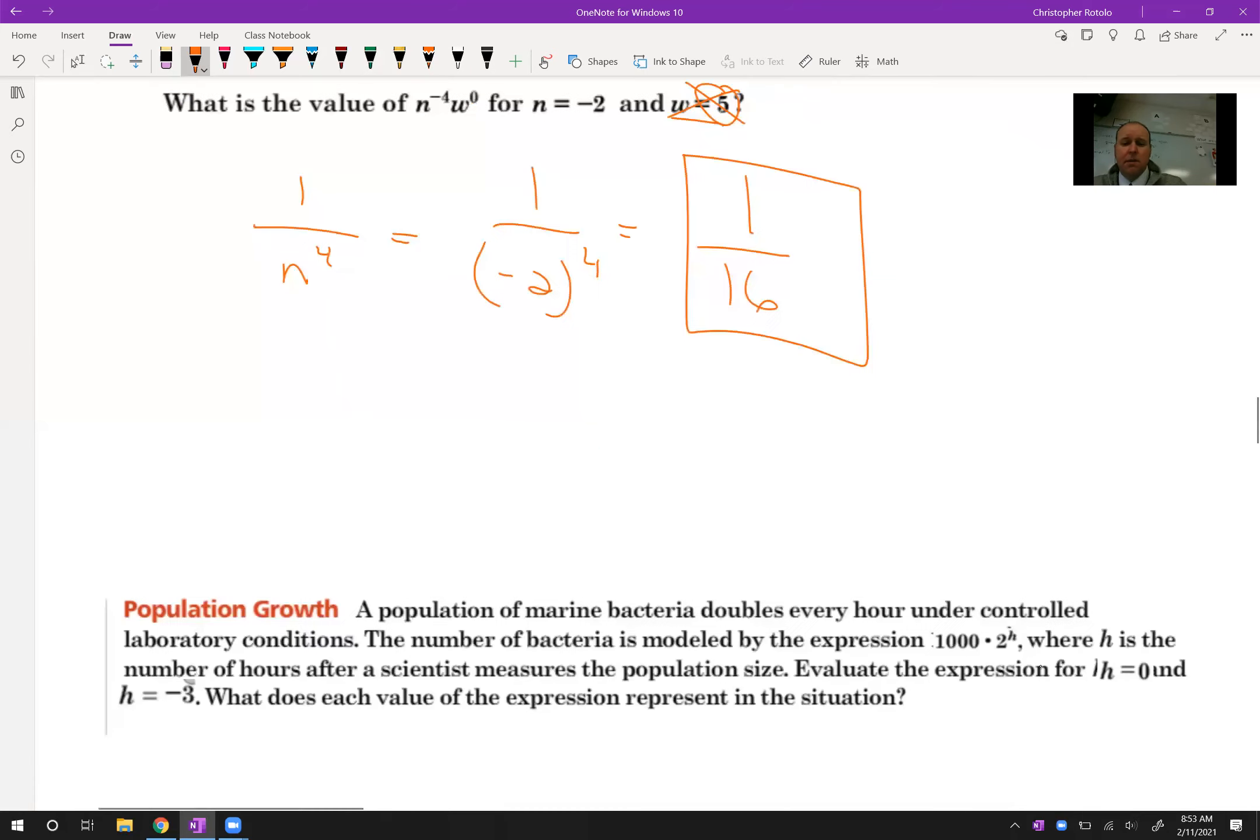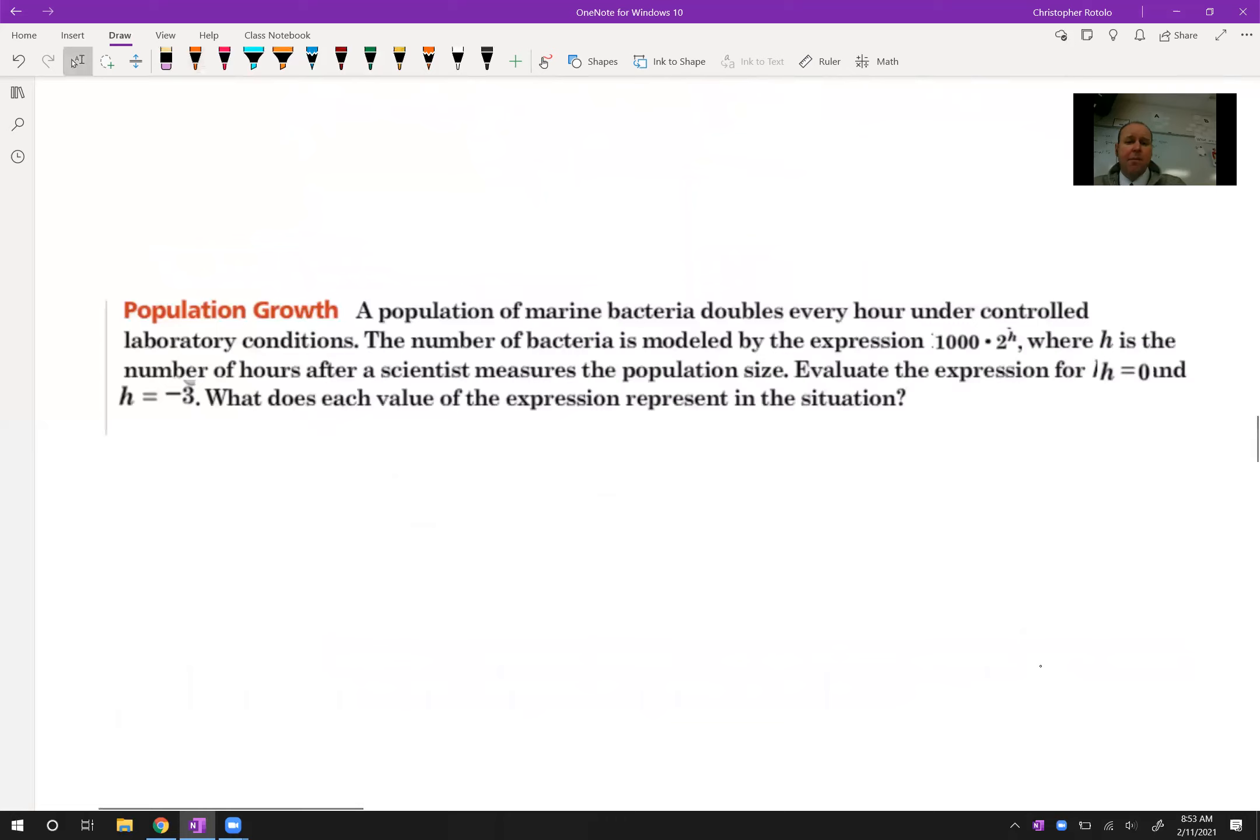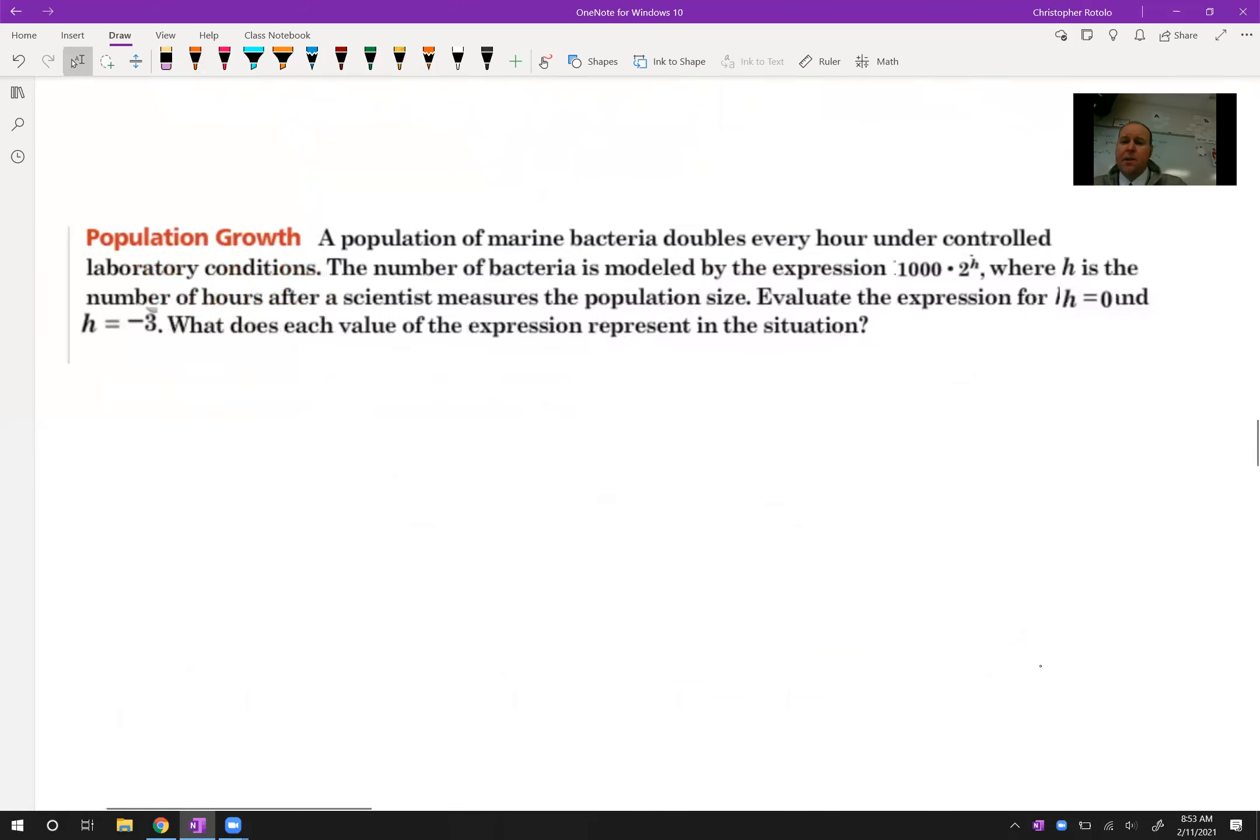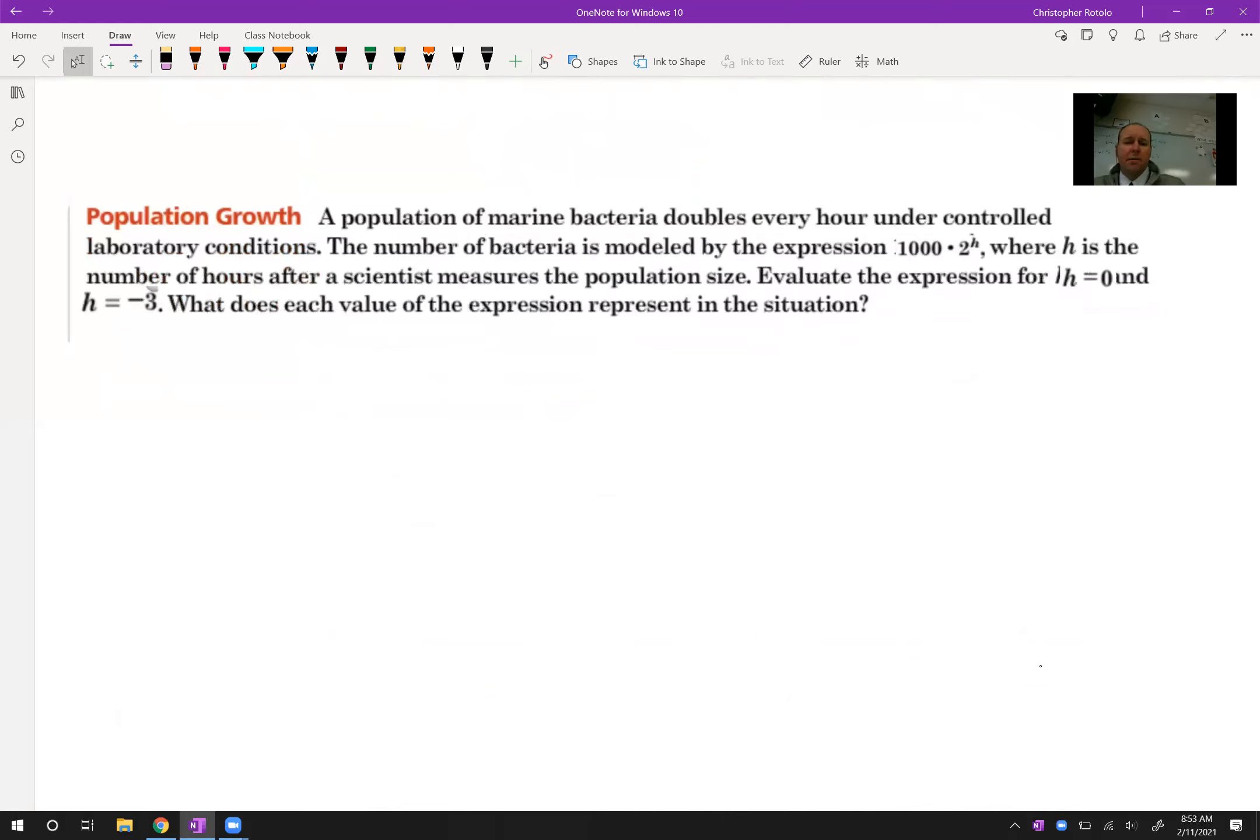Alright, so these get used here and there. Trying to deal with these. So here's the population of bacteria. So maybe this is something you deal with in biology class. Marine bacteria, so in marine biology specifically, so they gave me an equation. H is the number of hours. That's the only variable in here. So the scientists measure the population size. Evaluate the expression from the beginning, when H is 0. So when H is 0, that means I have 1,000 times 2 to the 0 power. It means I have 1,000 times 1. That means I have 1,000.